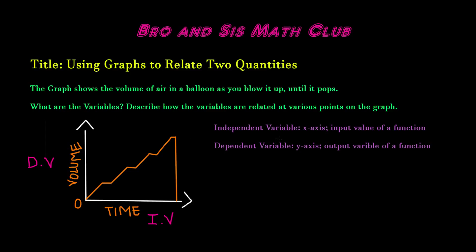Here we have the independent variable, which is on the x-axis. This is the input value of a function. And the dependent variable is on the y-axis, which is the output variable of a function. In this case, the independent variable is time and the dependent variable is volume.